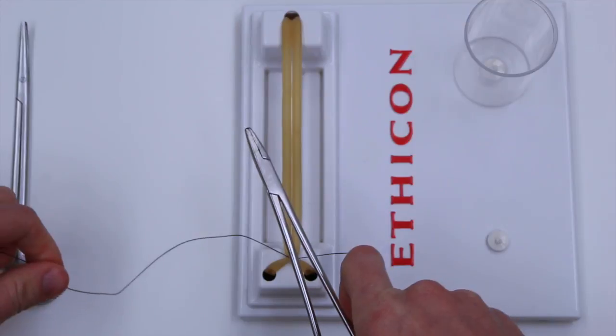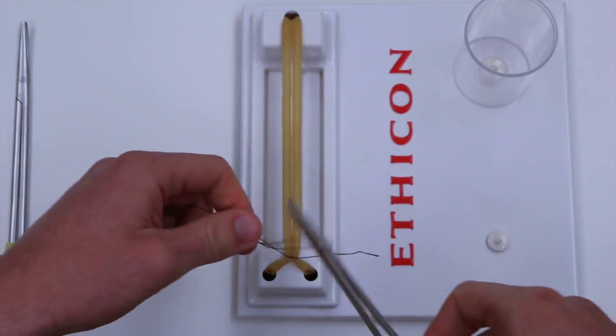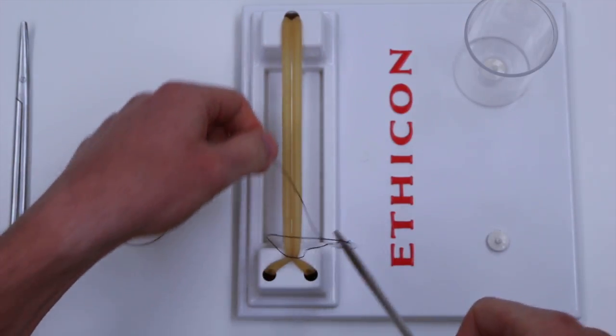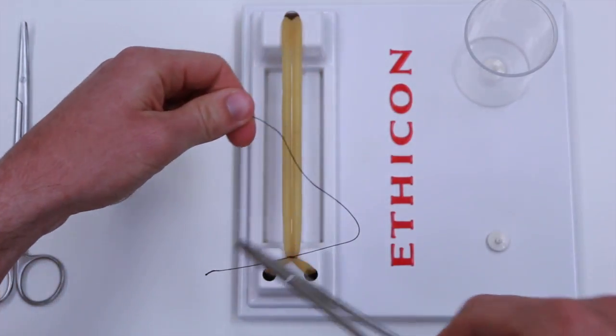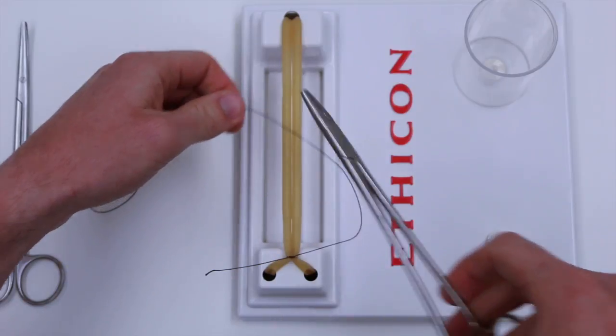Then again your instrument over the wound, wrapping once this time because only your first knot is a surgeon's knot and then pulling. Just like before your tail switches sides each time.